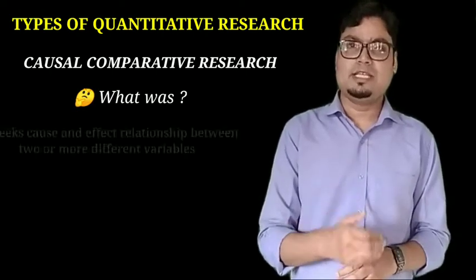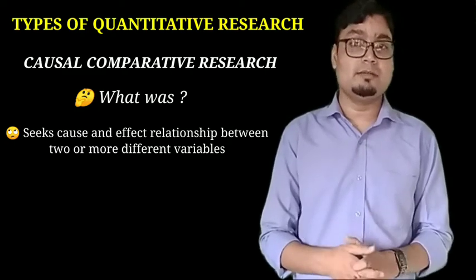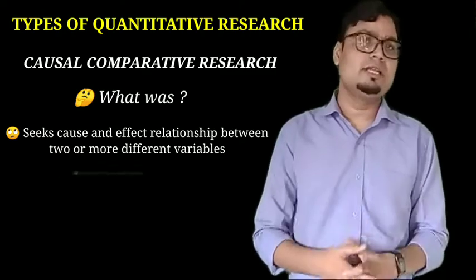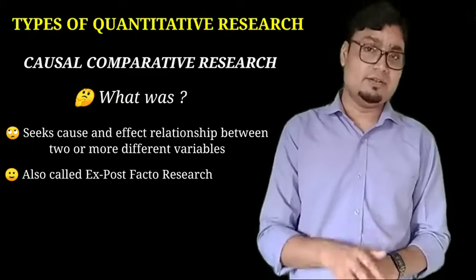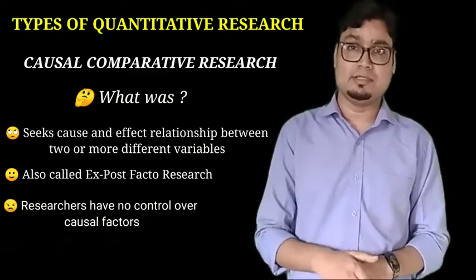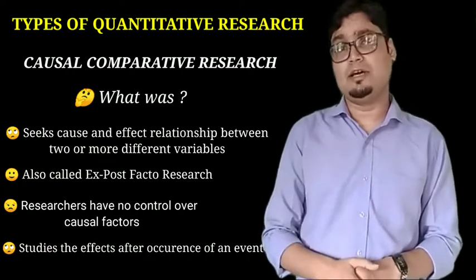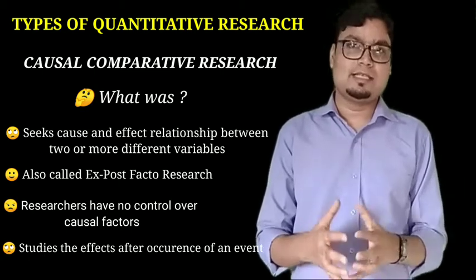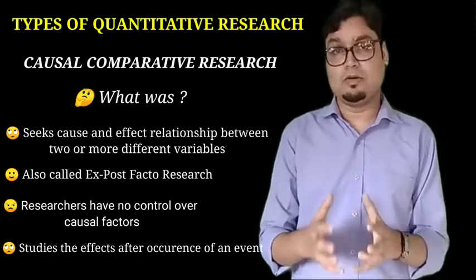Causal-comparative research tries to seek or discover cause-and-effect relationships between two or more different programs, groups, or variables. It is also called ex post facto research because in this type of research the researcher generally has no control over causal factors or independent variables, as it studies the effects after the occurrence of an event. For example, studying the effect of a natural disaster on education.